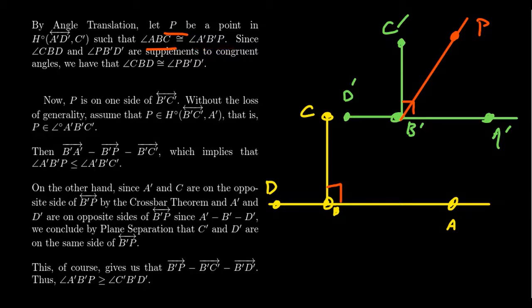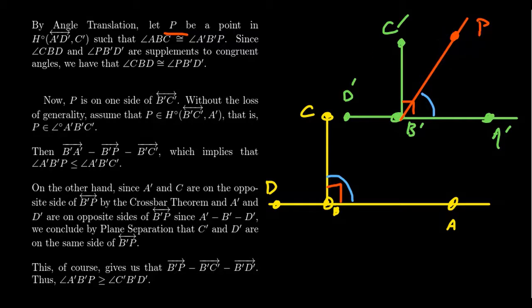This seems strange, but that's because we're considering the possibility that maybe ABC and A'B'C' aren't directly congruent. We're assuming angle ABC is congruent to angle A'B'P. I don't want the diagram to cause confusion — I'm not saying that P is interior to angle A'B'C'. It could be; we don't know that. It could be over here or on this ray. There are some possibilities, but for the sake of drawing I had to draw one of them.